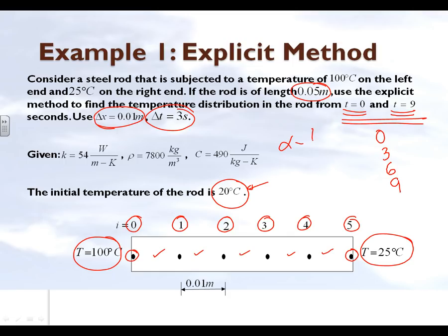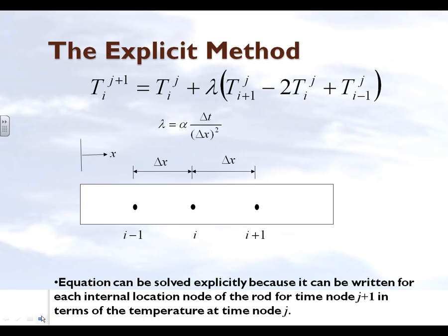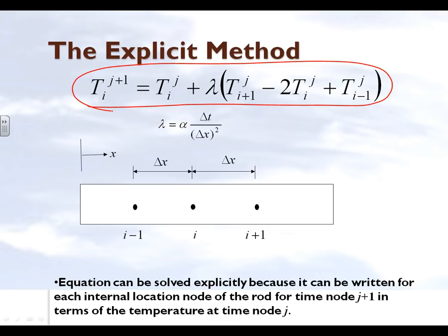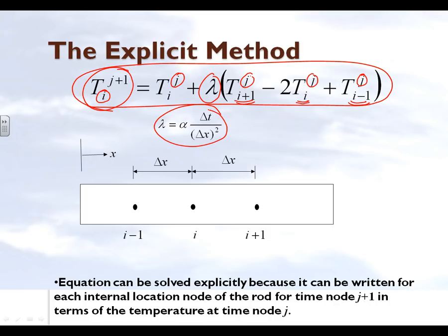Since alpha is k divided by rho c — that is the thermal diffusivity — we are given the values of k, rho, and c, which we need for the equation. Lambda is defined as alpha times delta t divided by delta x squared, where delta t is the time step, delta x is the distance between two nodes, and alpha is the thermal diffusivity.